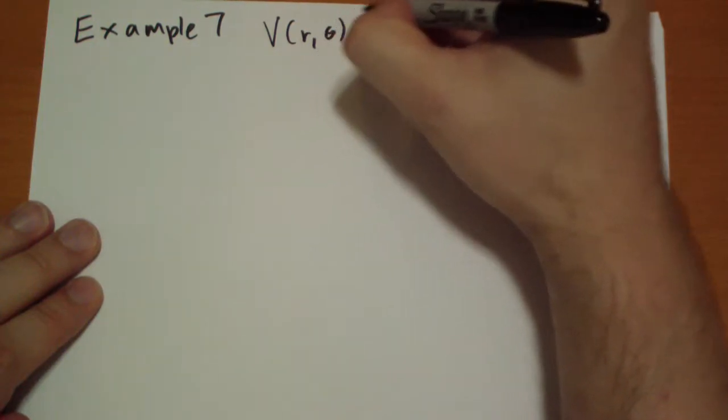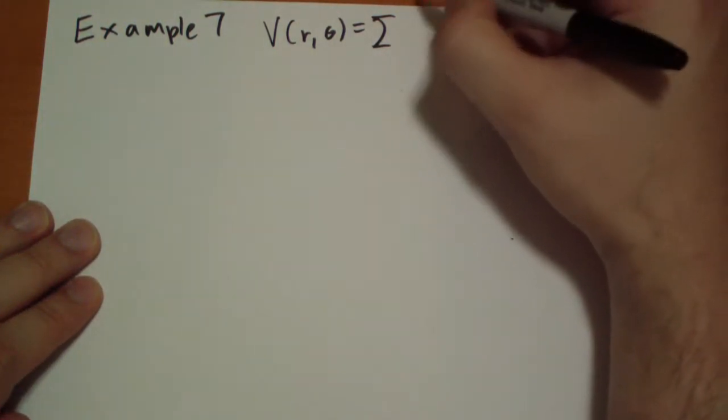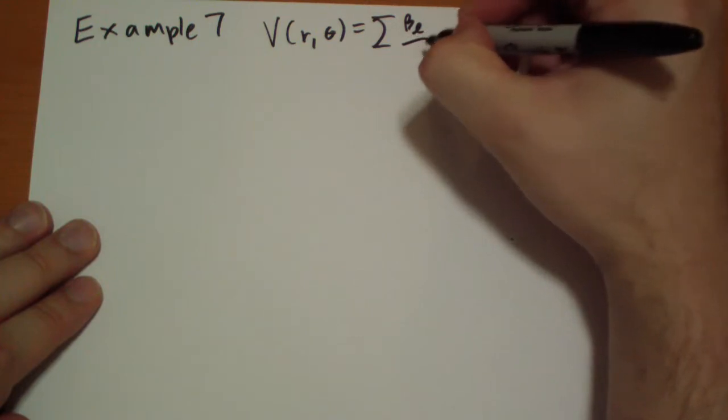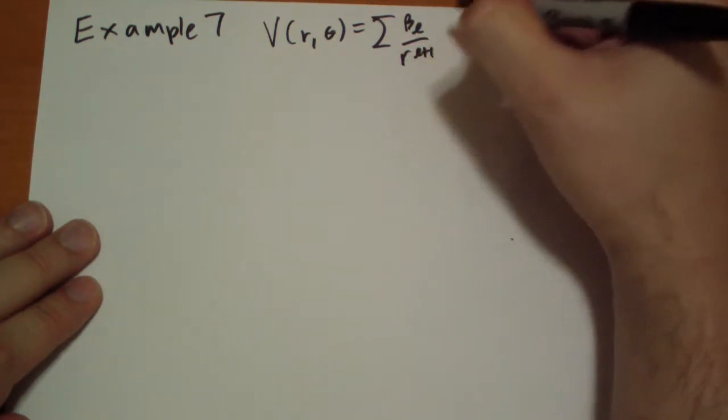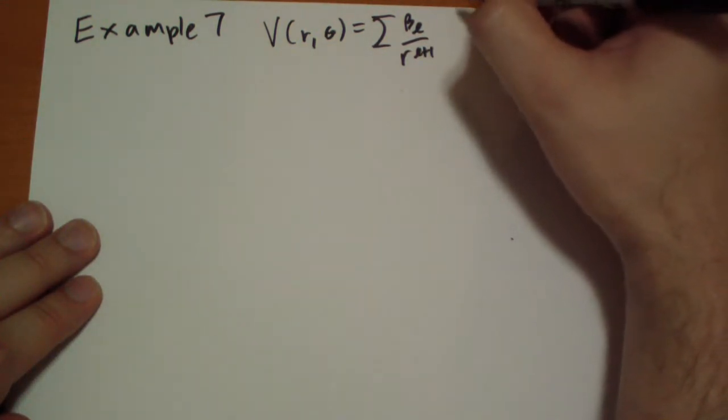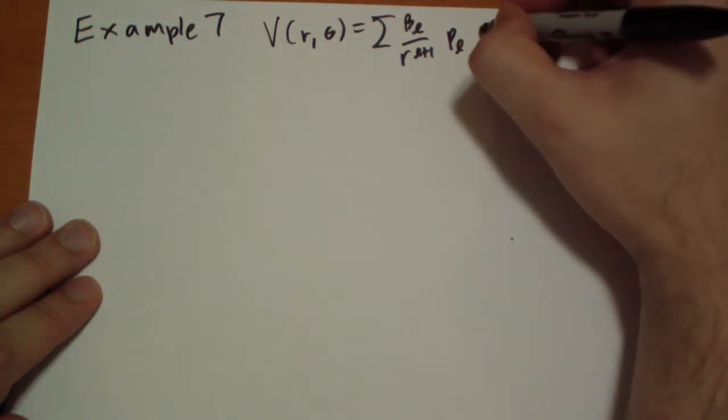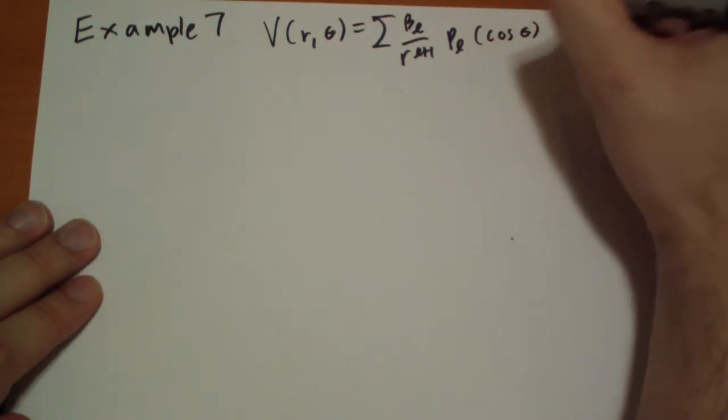So V of R comma theta is going to be equal to the sum of V_L over R to the L plus 1 times the P_L of cos theta.